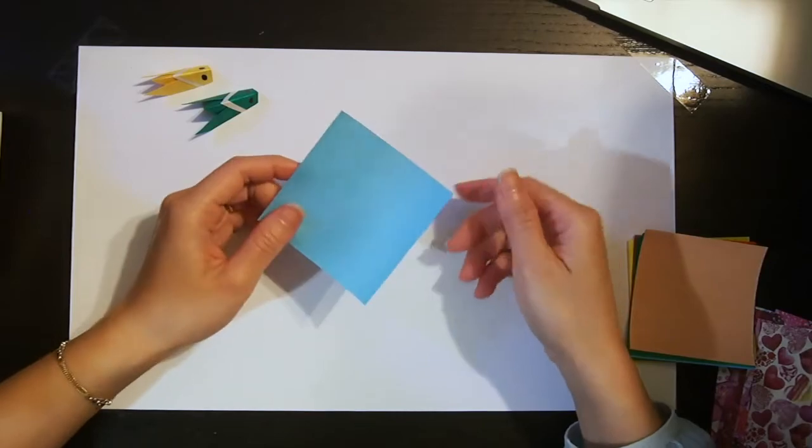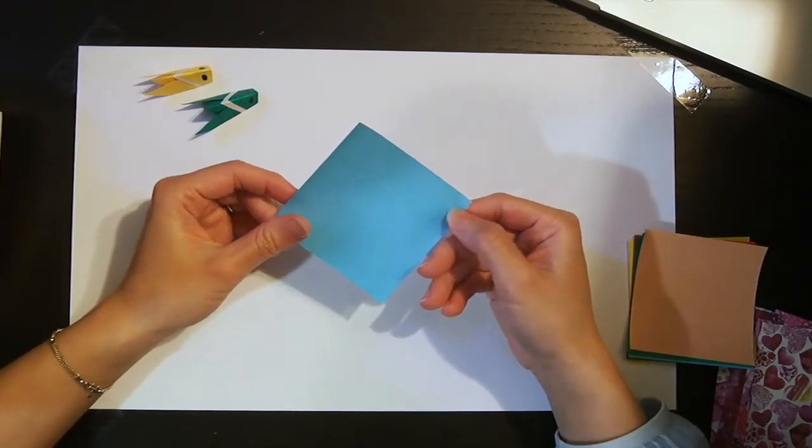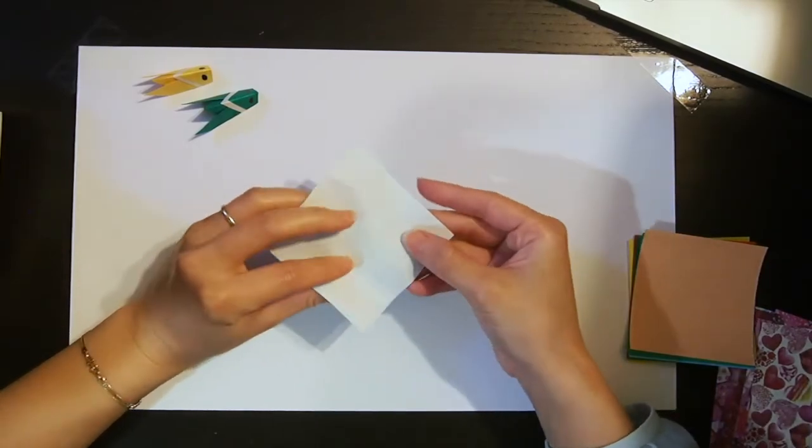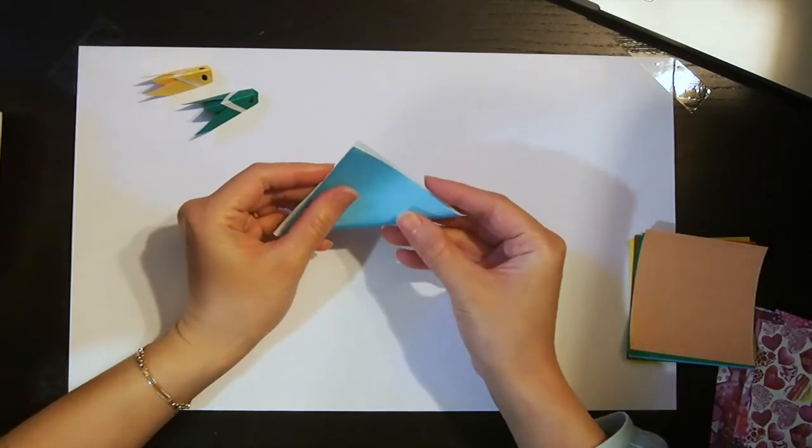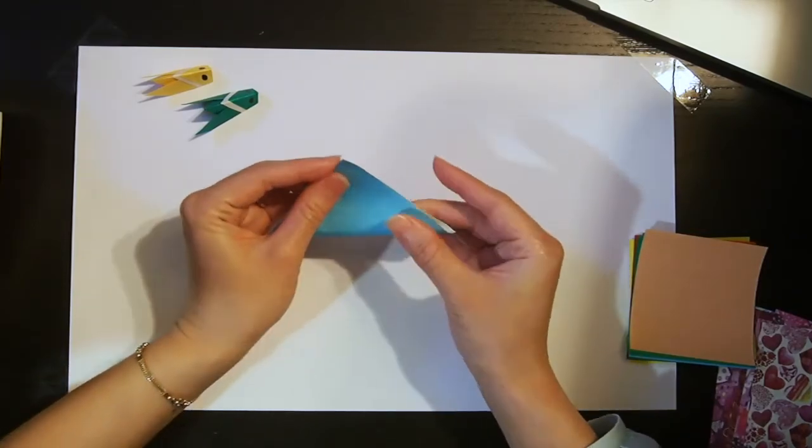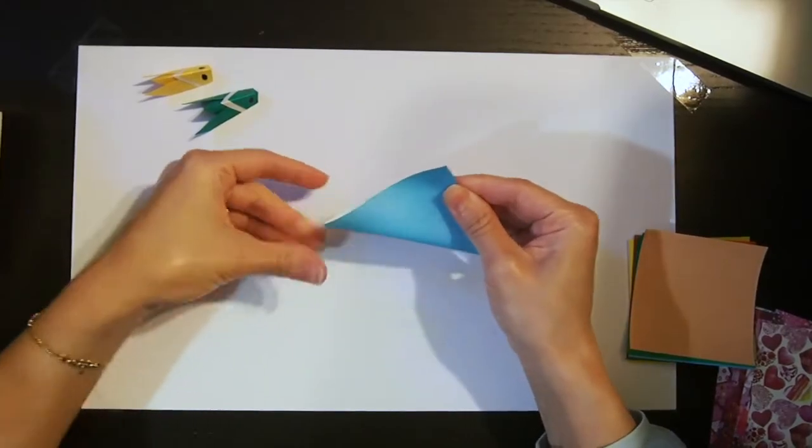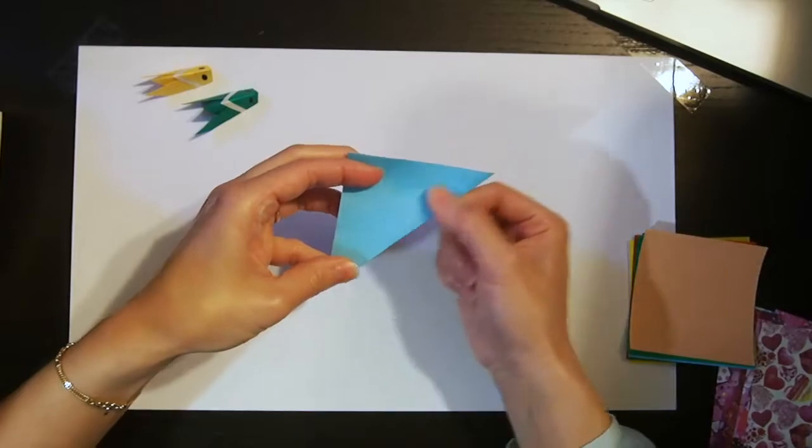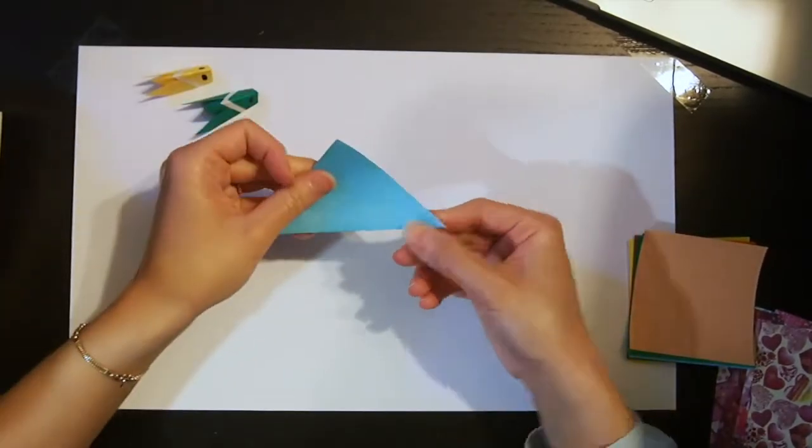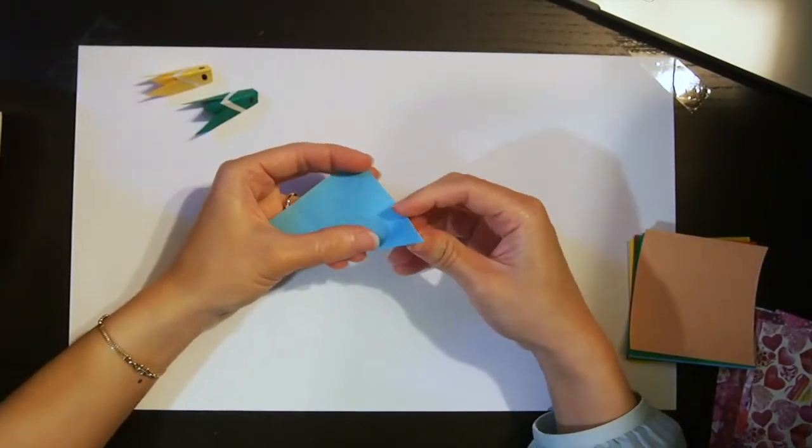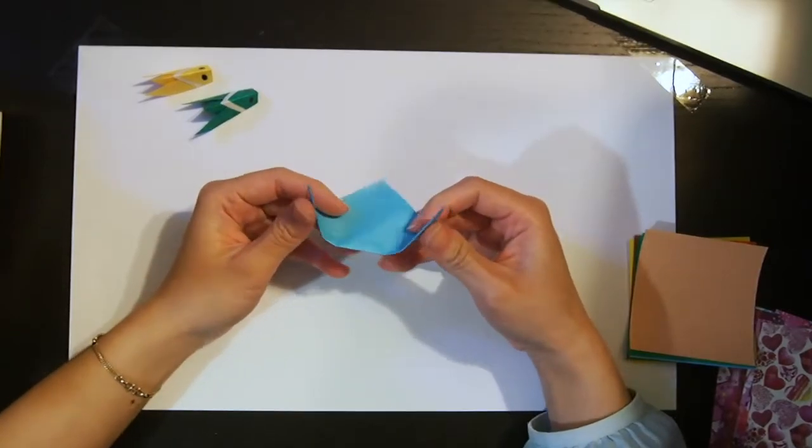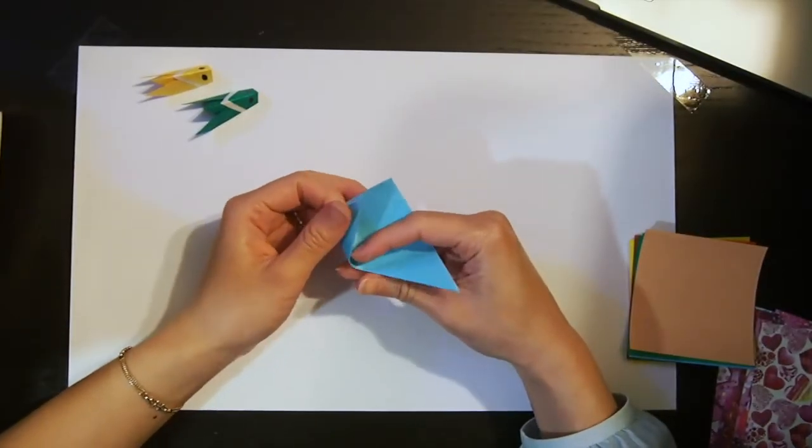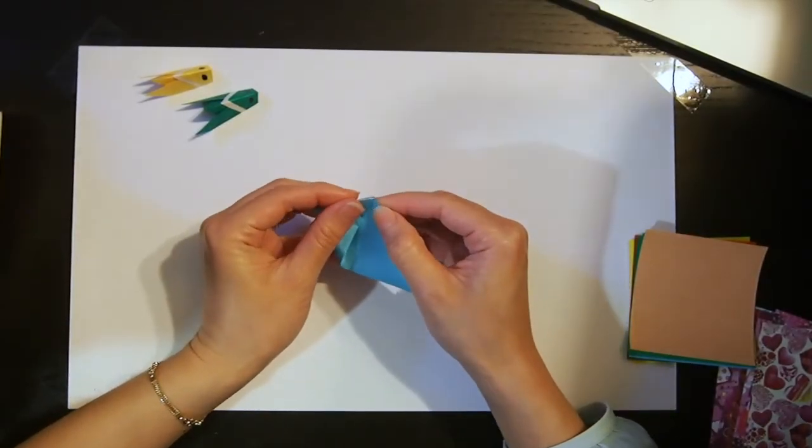The first step, we're going to fold it in half. Okay, then we're going to fold the corners, these two corners up here.